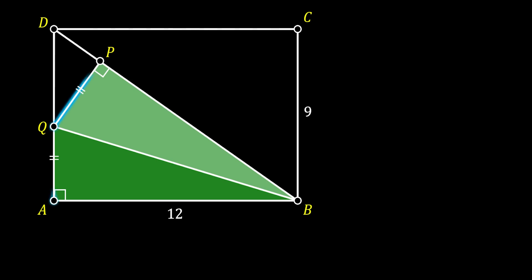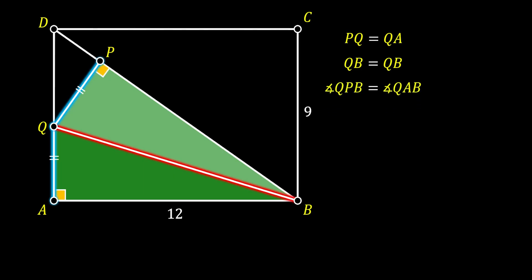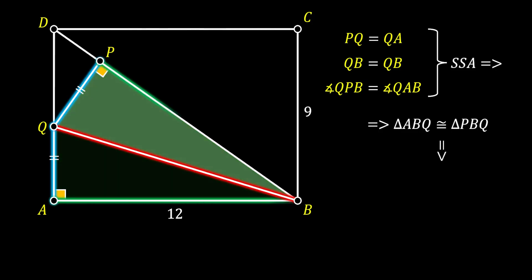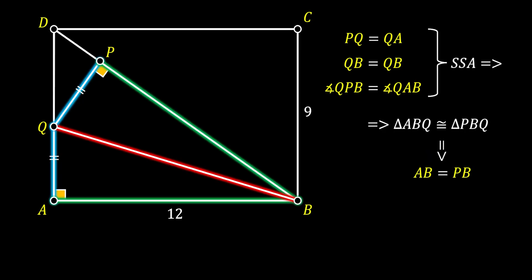You can see that line PQ is equal to line QA, since this is the condition of our assignment. Next, line QB is congruent to itself. And finally, we can notice that the angles at point P and point A of those two triangles are also equal, since those are right angles. From this, using the side-side-angle theorem, we can conclude that triangles ABQ and PBQ are congruent. Furthermore, lines AB and PB are equal, so line PB will also have the length of 12.